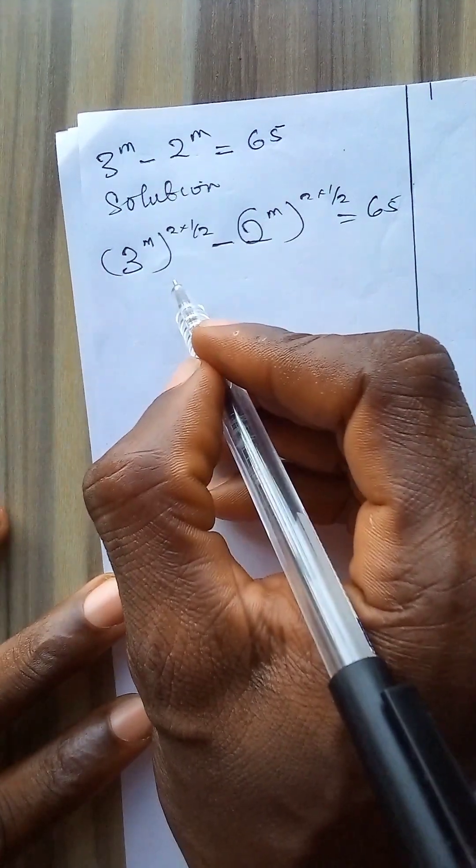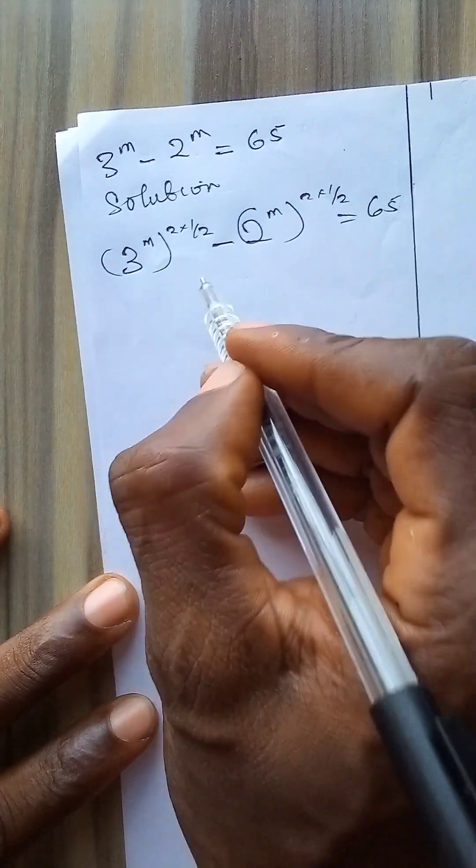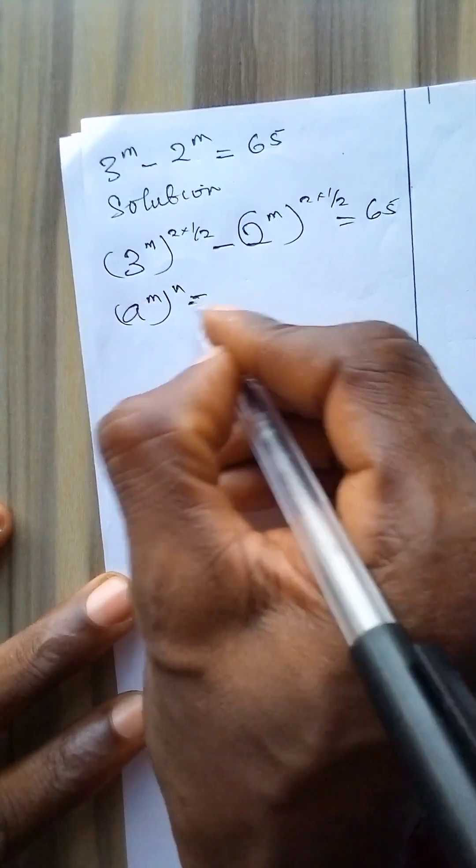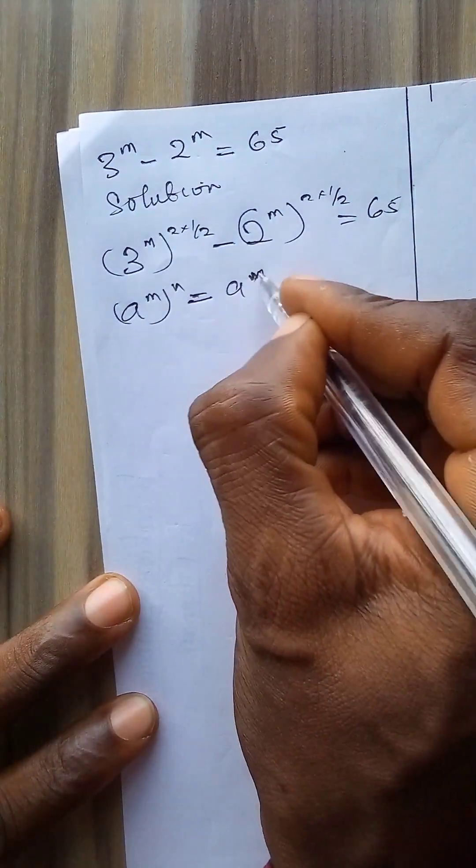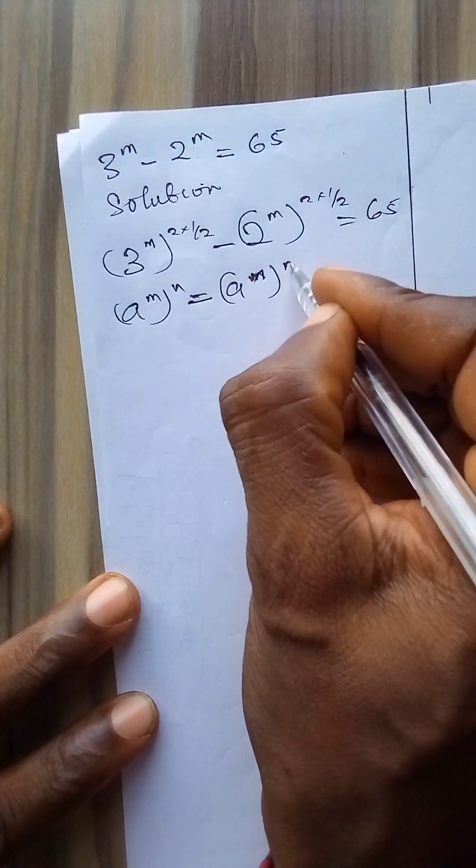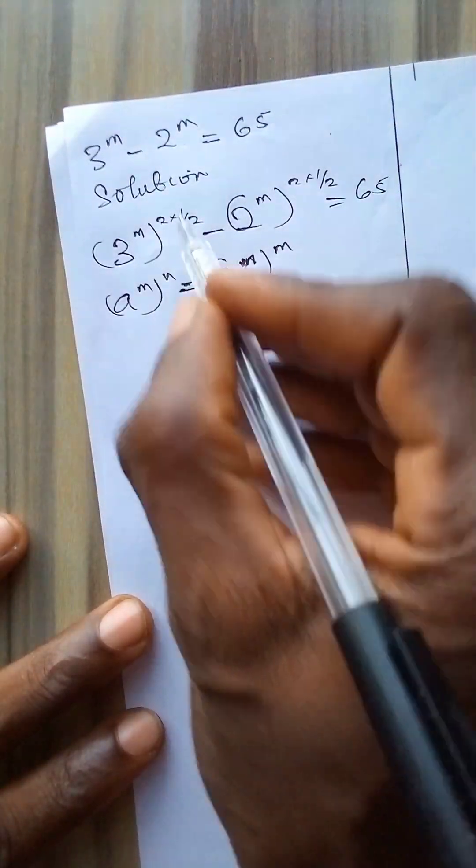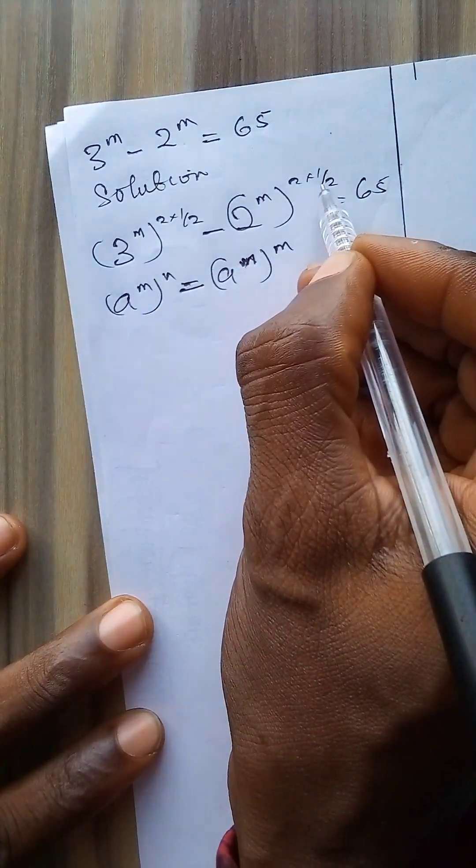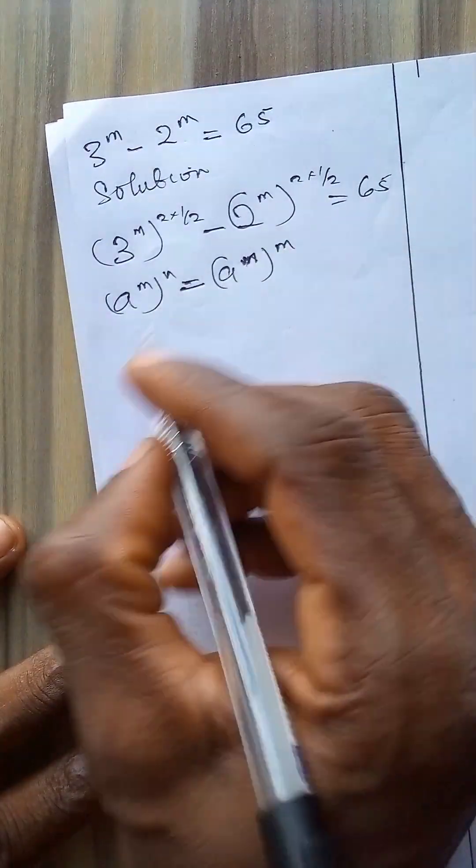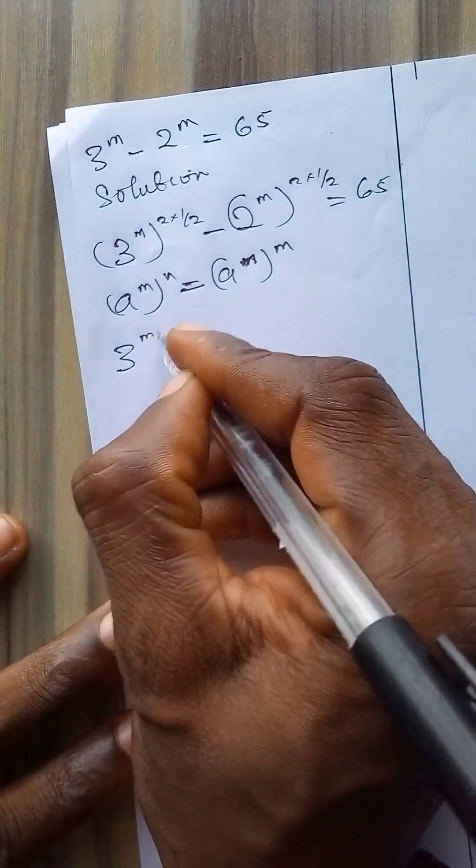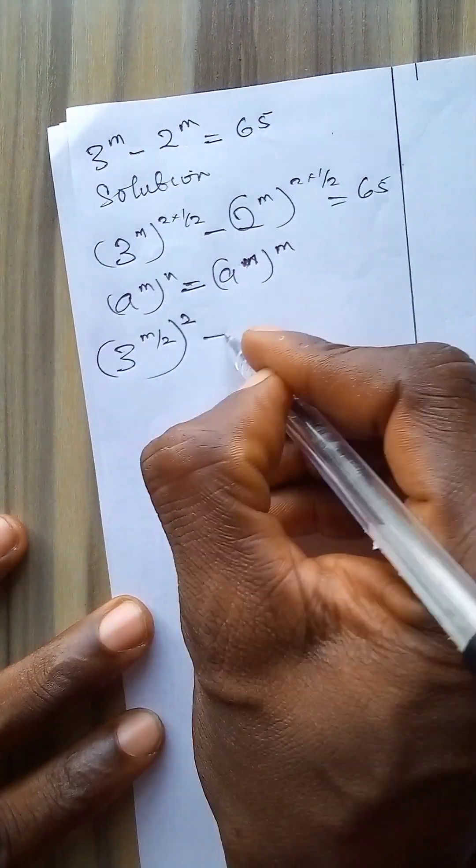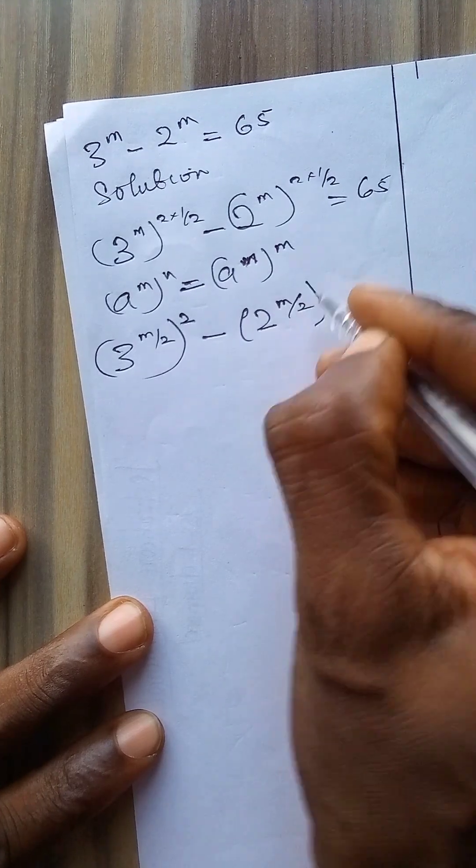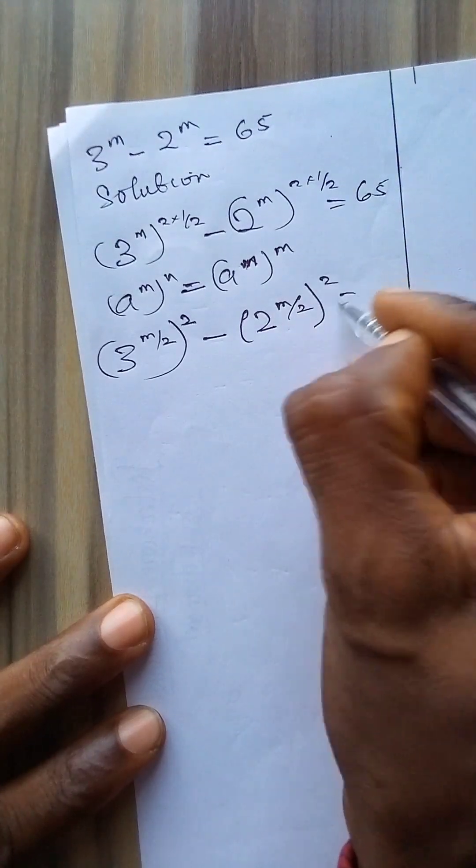Now let's remember that multiplication is a commutative operation, so if I have a to power m times n, that's the same thing as a to power m times a to power n. So I'll apply this here where I'll move the 1 over 2 into the brackets, the same thing in this second term. So that becomes 3 to power m over 2 raised to power 2 minus 2 to power m over 2 raised to power 2 is equal to 65.